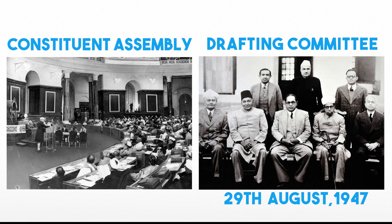When he was unanimously elected as chairman of the drafting committee, this was a pleasant surprise for him. He said, 'I came to the Constituent Assembly with no greater aspiration than to safeguard the interest of the Scheduled Caste.' The members of the Constituent Assembly met in 11 sessions, open to the public for 166 days, spread over 2 years, 11 months and 18 days before adopting the constitution. Out of 165 sittings of the Constituent Assembly, 114 were spent debating the draft constitution. The Constituent Assembly debates are the only source to know how the constitution was made.